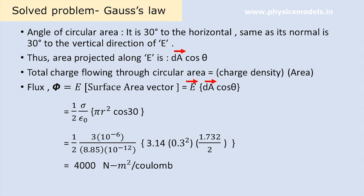The flux flowing through the circular disk will be equal to the electric field vector into the area vector. E, as we saw before, is half into sigma by epsilon zero. The area vector is area of that circular disk, which is pi r squared, into cos theta, into cos 30. Doing all the multiplication, you will get flux as 4000 newton meter square per coulomb.